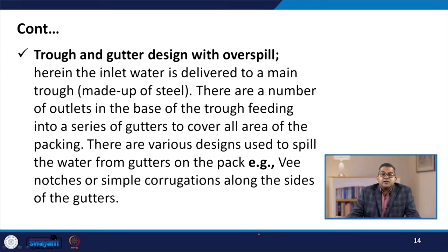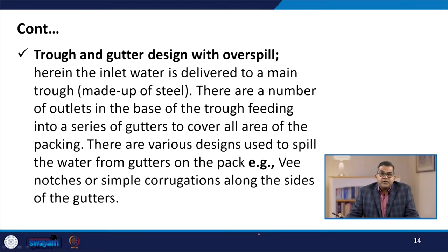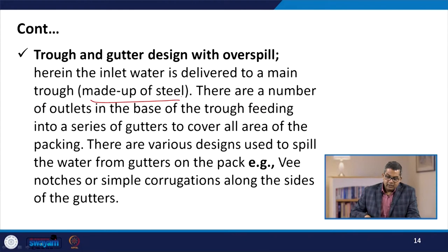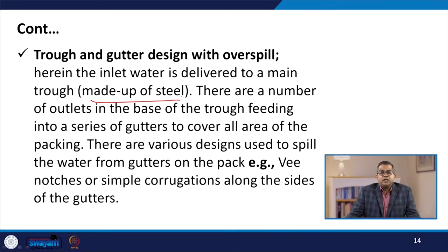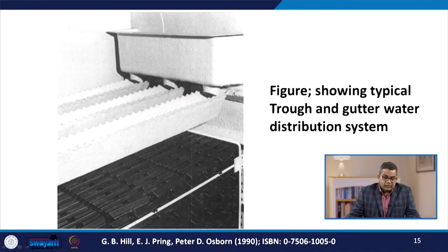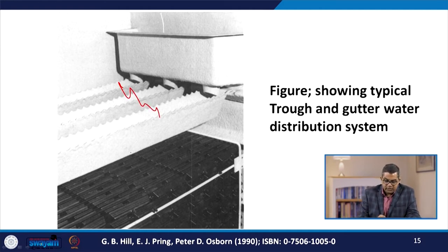The second approach is the trough and gutter design with over-spill. In this system, the inlet water is delivered to a main trough, usually made of steel. There are a number of outlets in the base of the trough feeding into a series of gutters to cover all areas of the packing. Various designs are used to spill the water from the gutter onto the pack, such as V-notch or simple corrugation along the sides of the gutter.